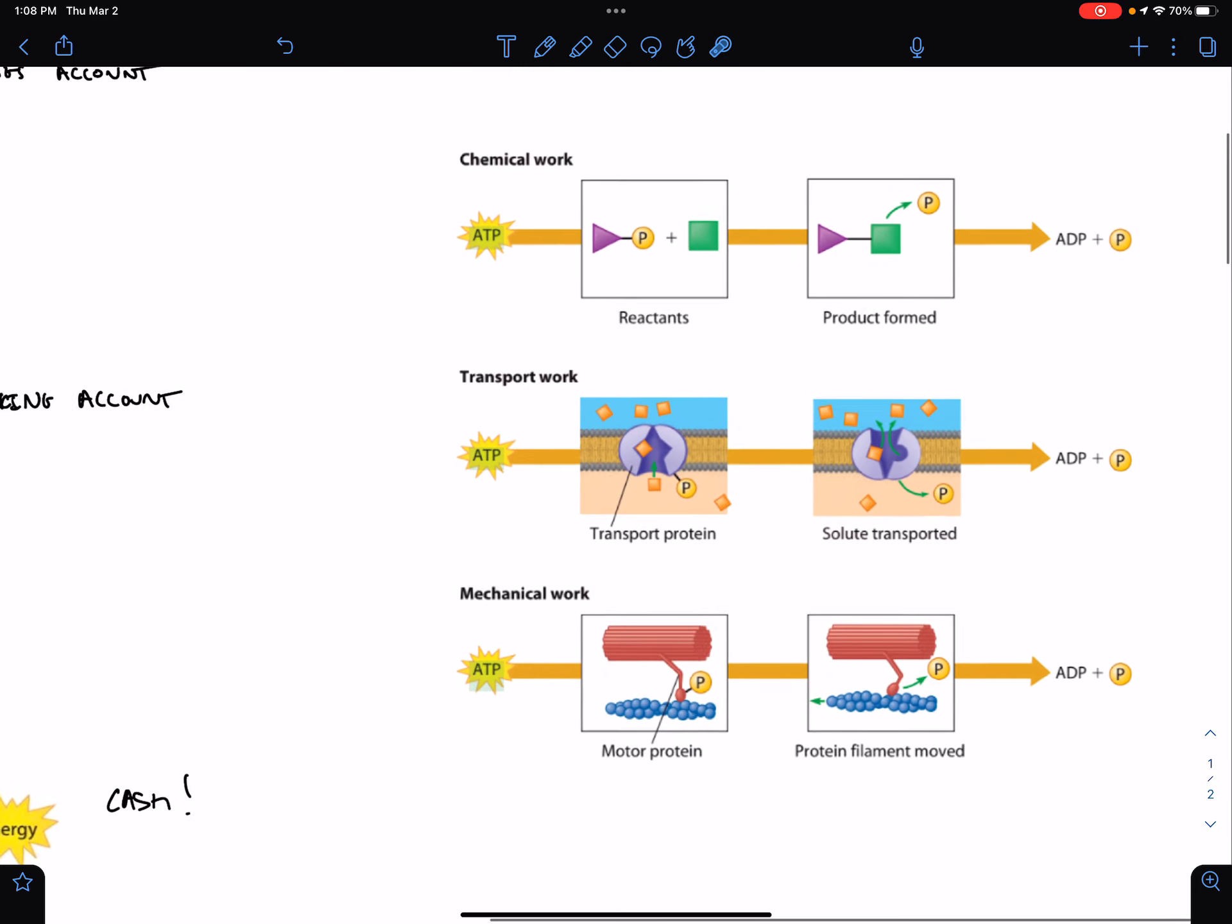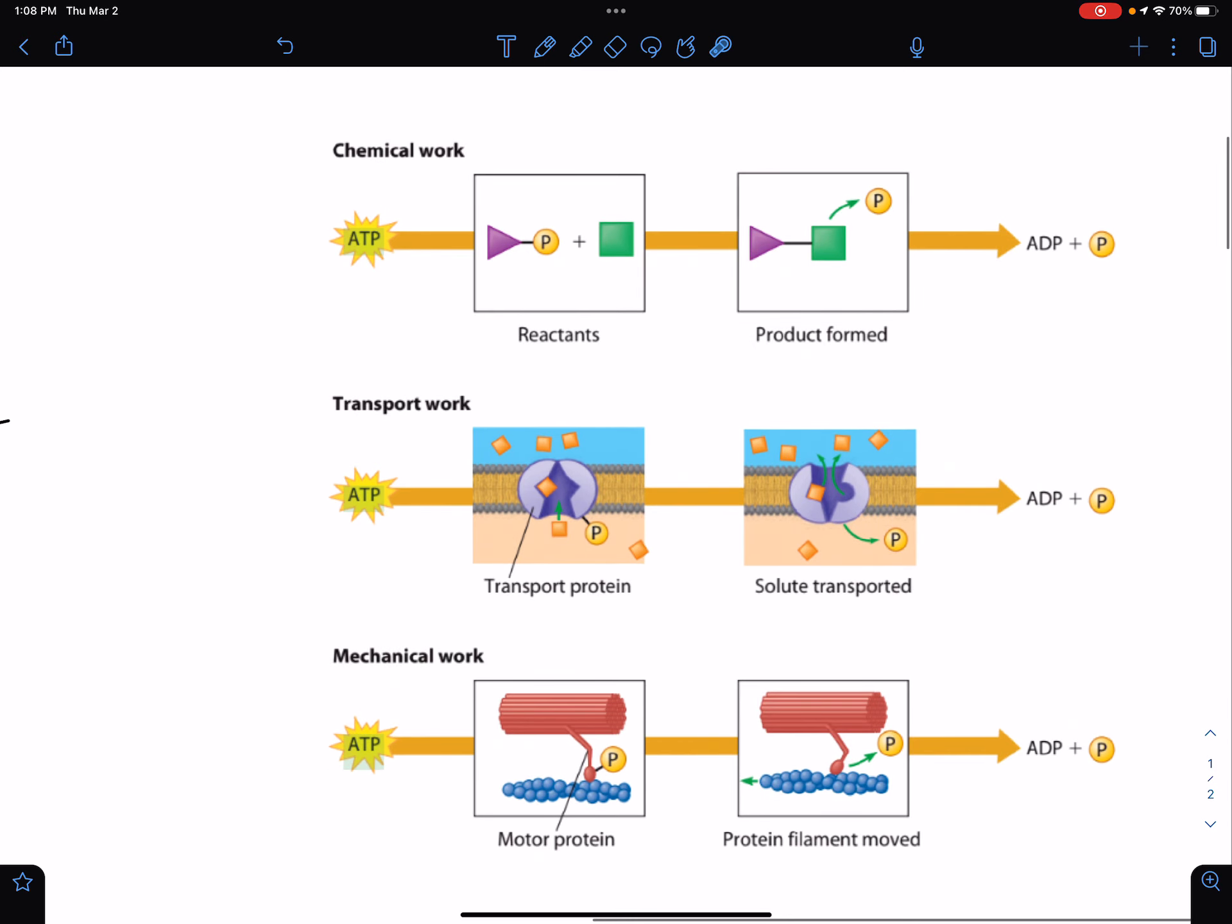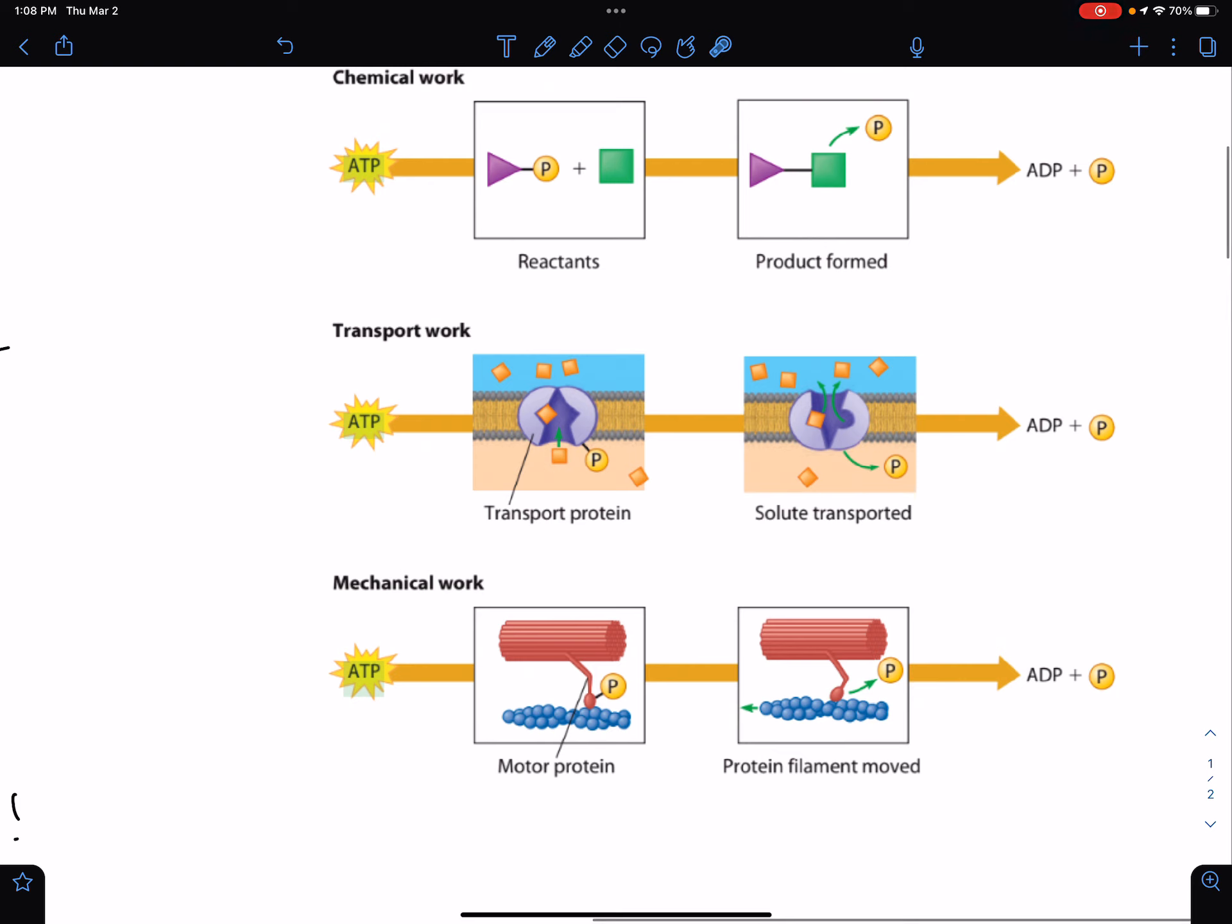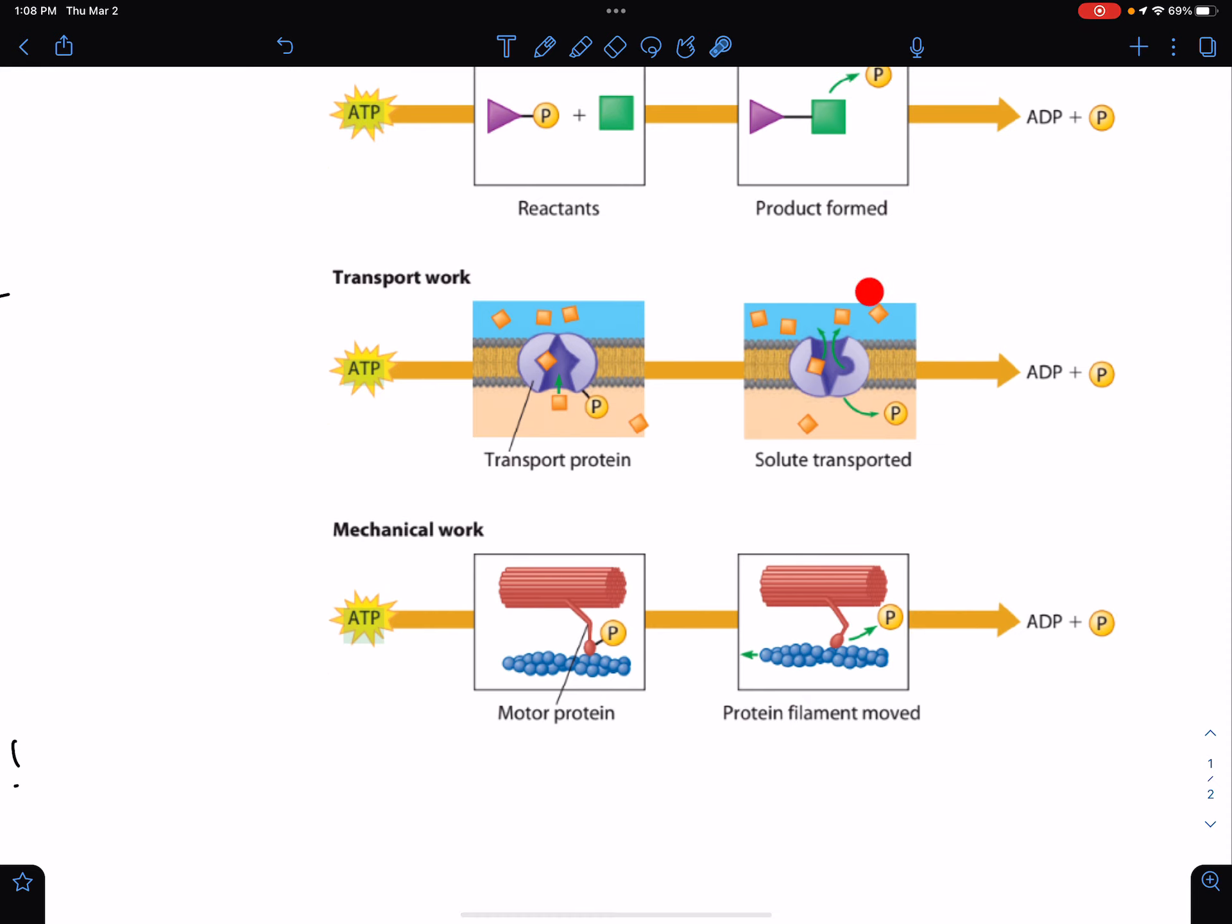So what is ATP work used to do? We can use it for a lot of different things in our cells. We can use it to form anabolic reactions where we're synthesizing bigger molecules from smaller individual components. Anytime we need to build something in the cell, we use ATP. We also use it to transport things. Active transport, when we pump things against their concentration gradient, requires the input of energy, and ATP is where we get that energy.